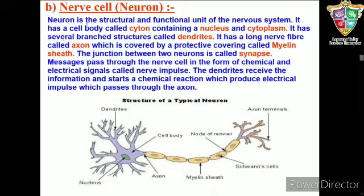Each neuron is made up of three parts. The first is the cytone, or cell body, containing a central nucleus and cytoplasm. It also contains small granular Nissl granules, which synthesize proteins in the cells.